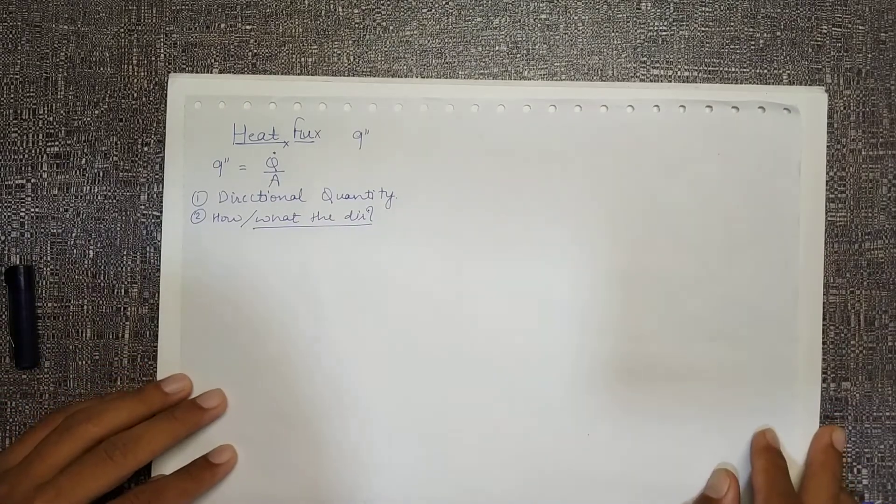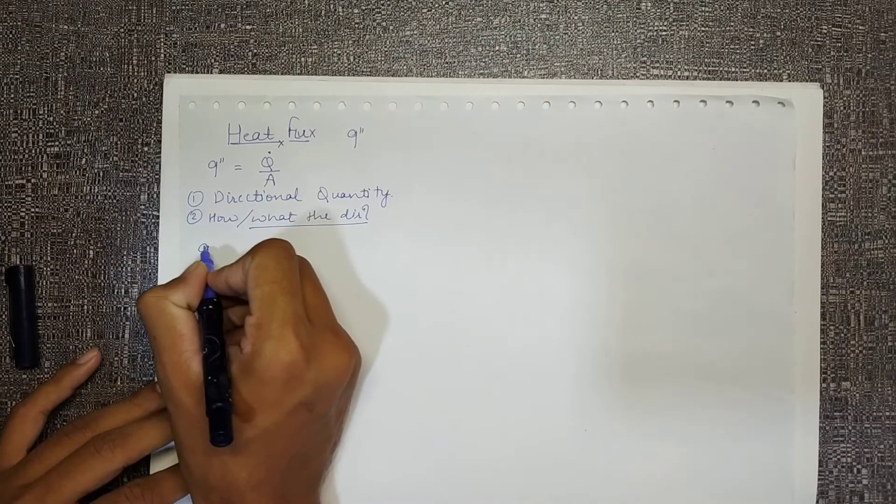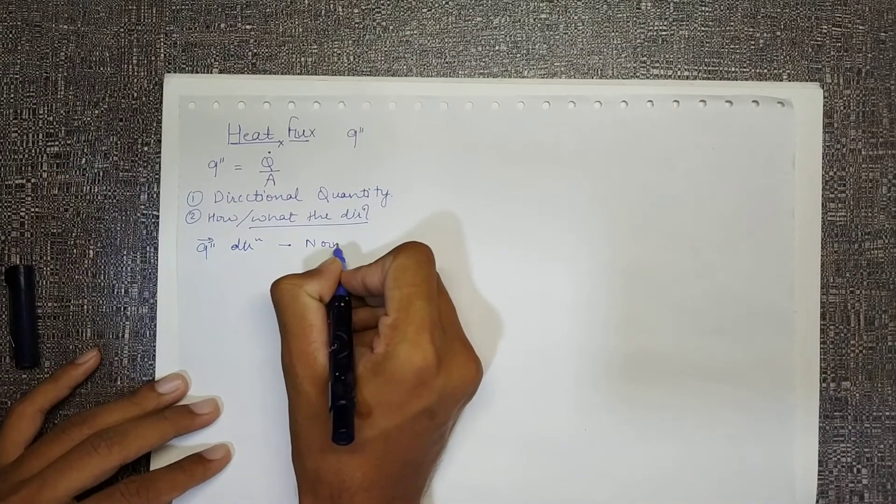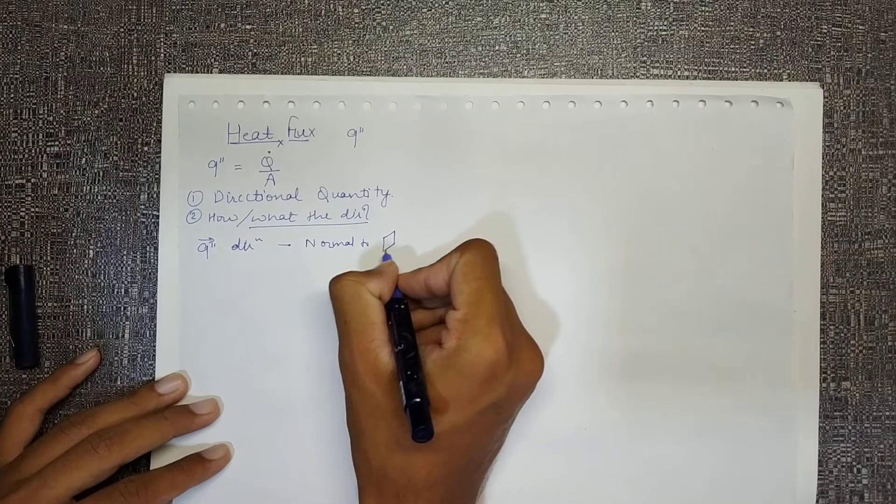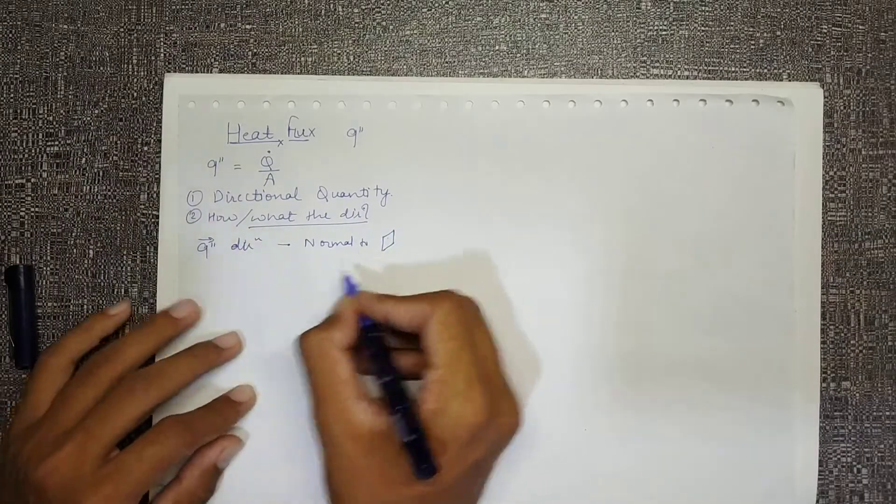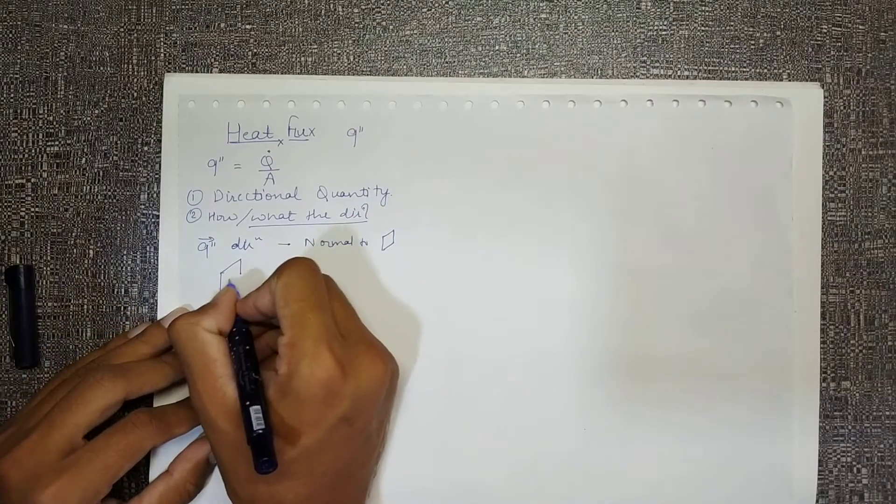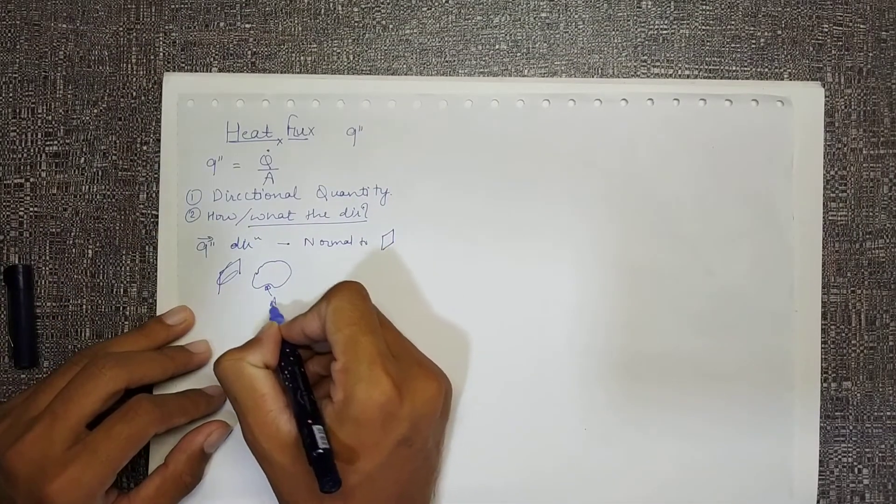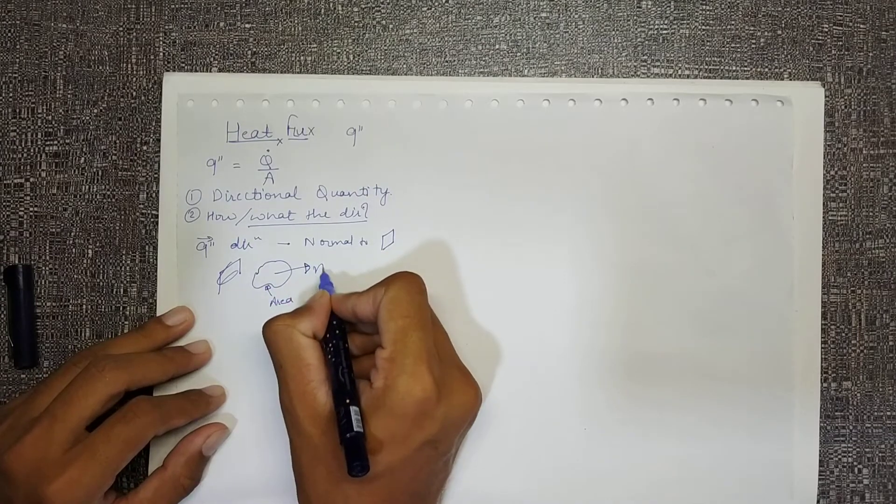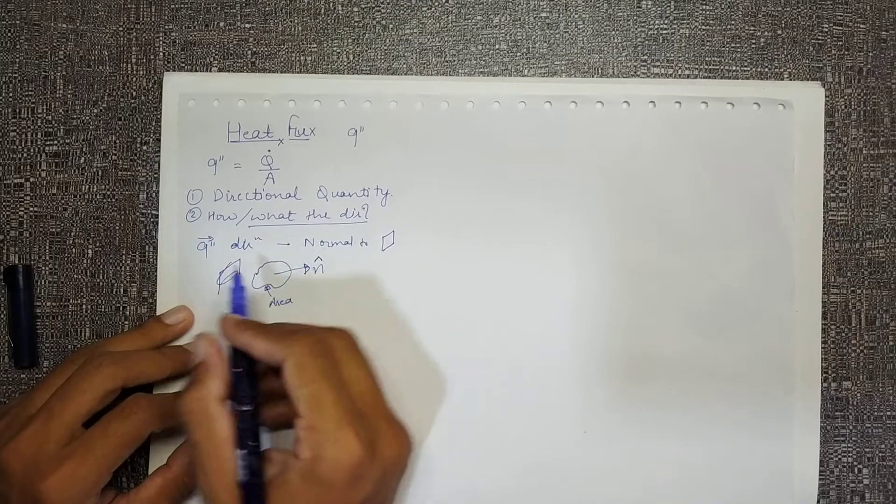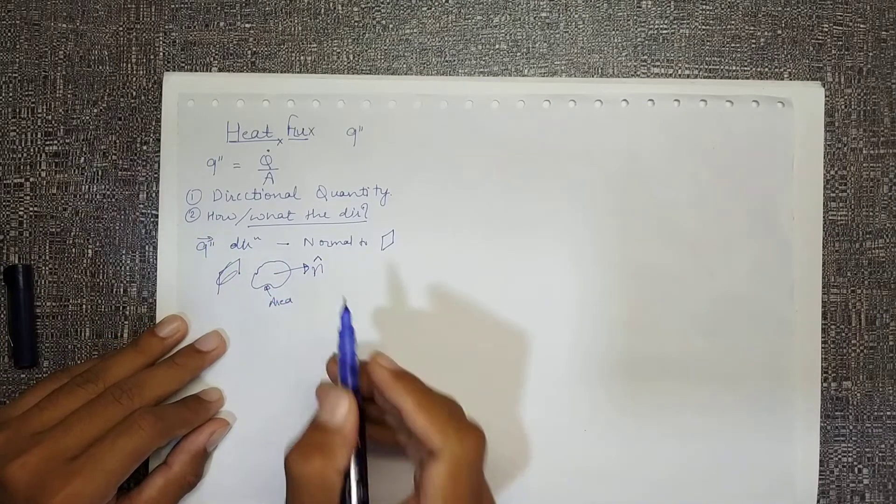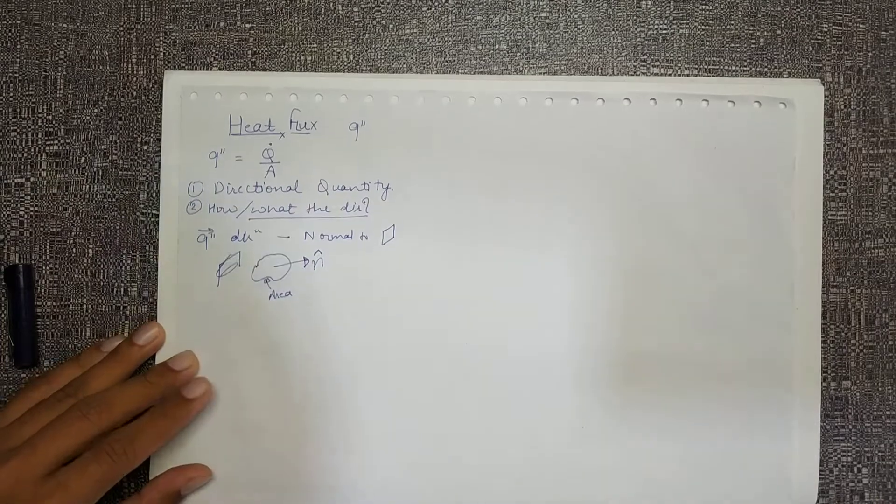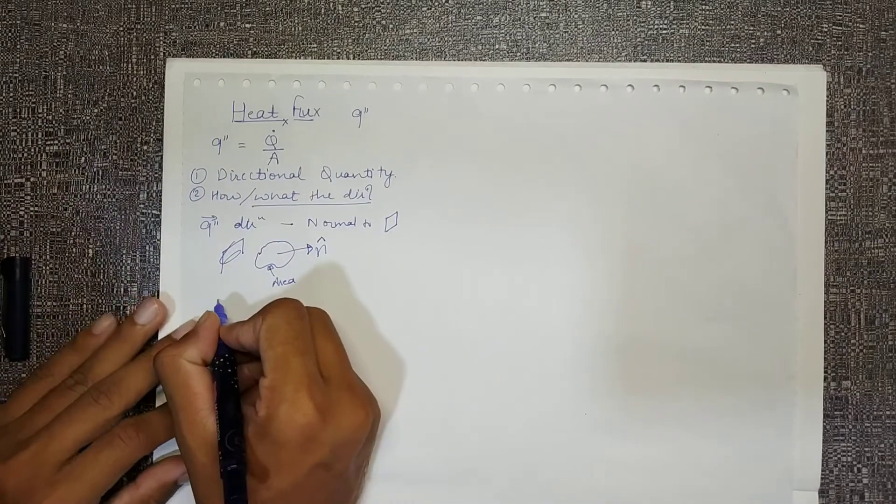As I said, the direction of q double dash is normal to the heat transfer area. This is the area, or if we say that heat transfer is occurring through this - it can be irregular shape also - if it is occurring through this area and the normal to this area is this, then I can say my q double dash direction is also in the direction of n cap. The other thing which I said is that the direction of heat transfer is perpendicular or normal to the isothermal surface.